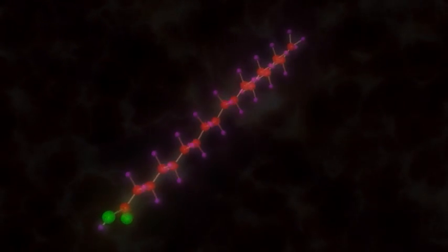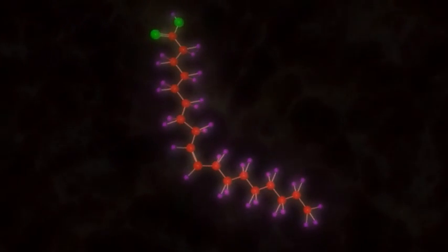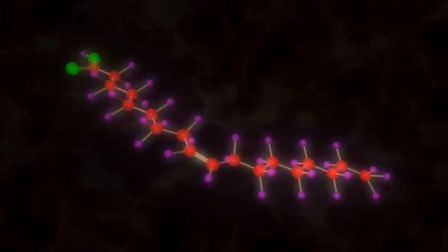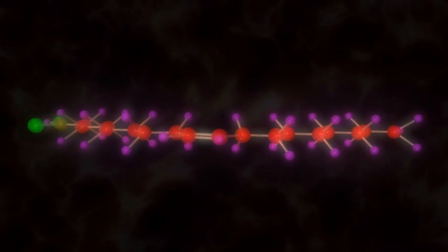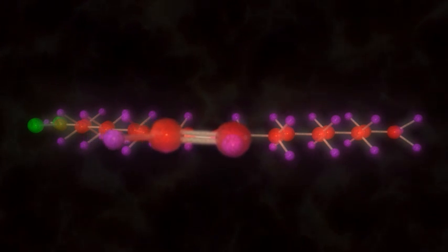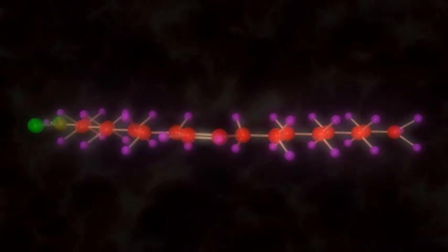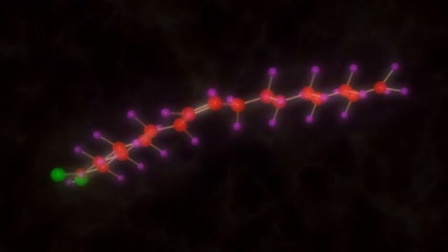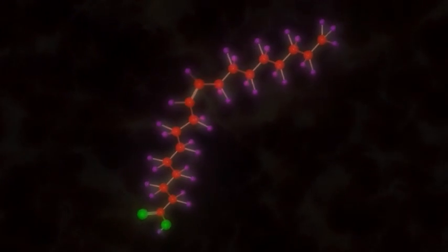An alternate possibility for an 18 carbon fatty acid is this one. It is a molecule of oleic acid. Notice there is a double bond between carbons 9 and 10. So each of those carbons have only one bond available for the side hydrogen.